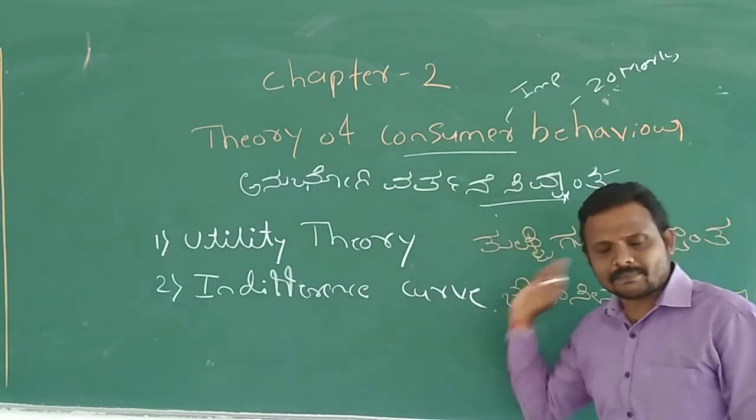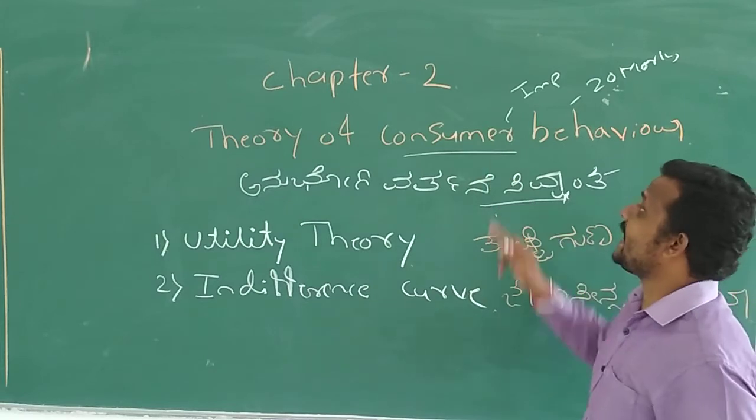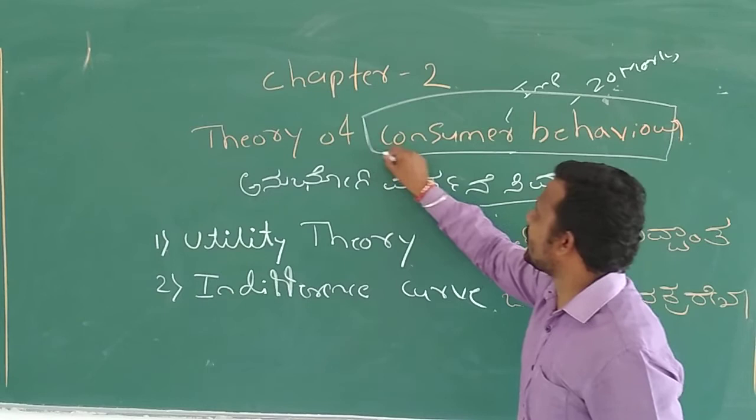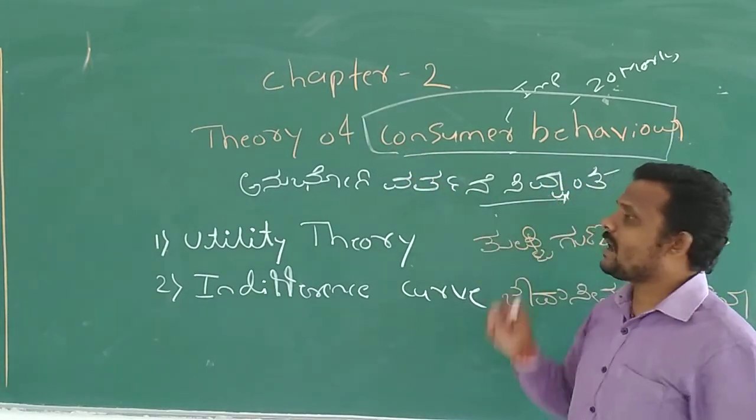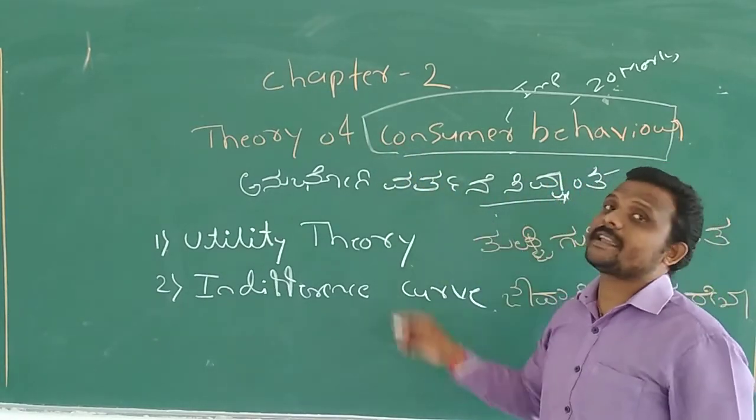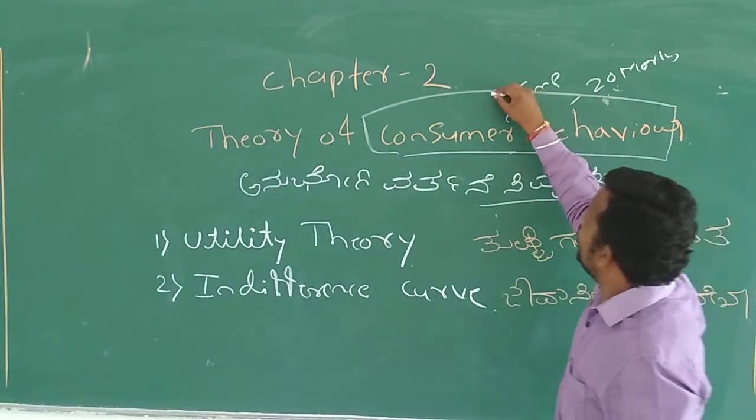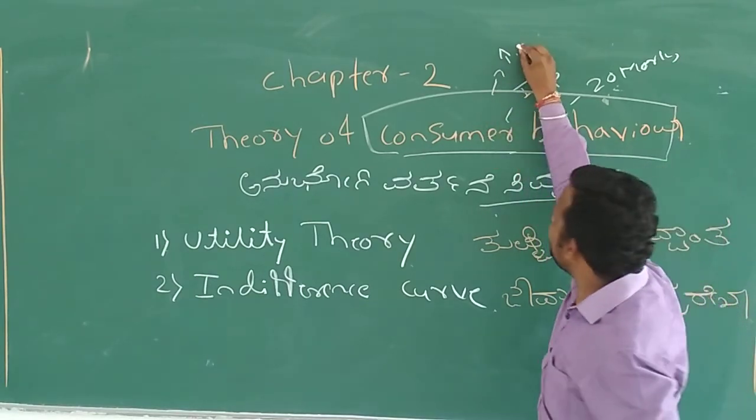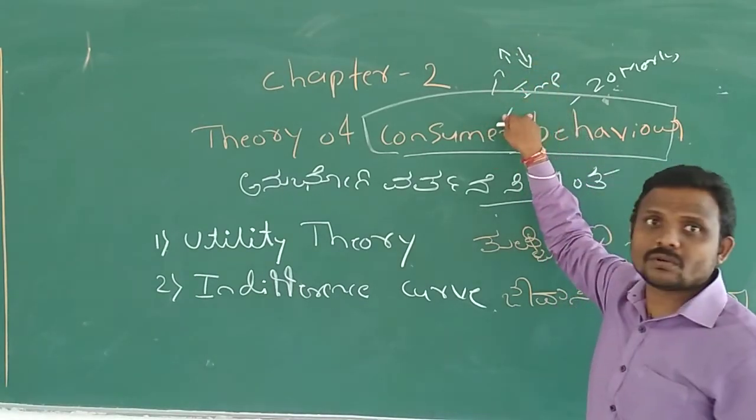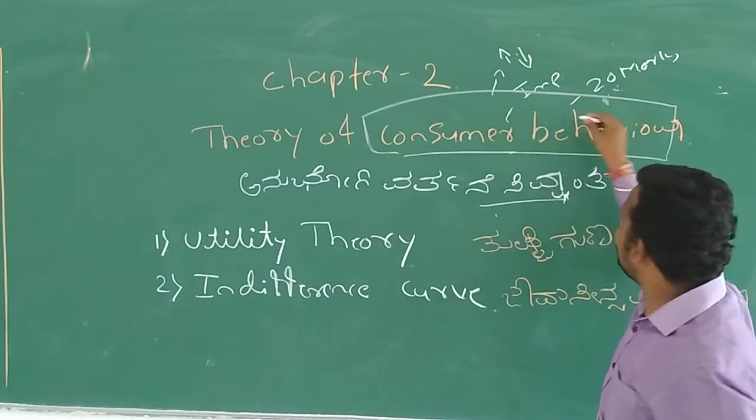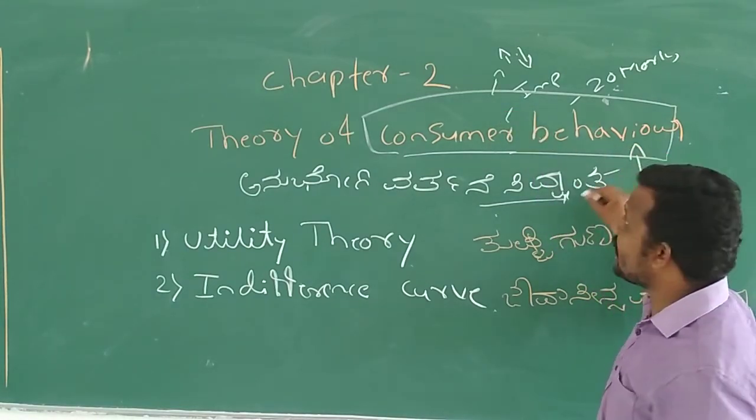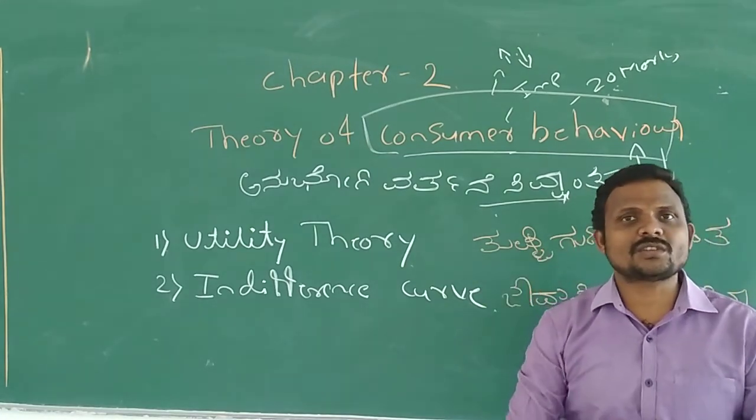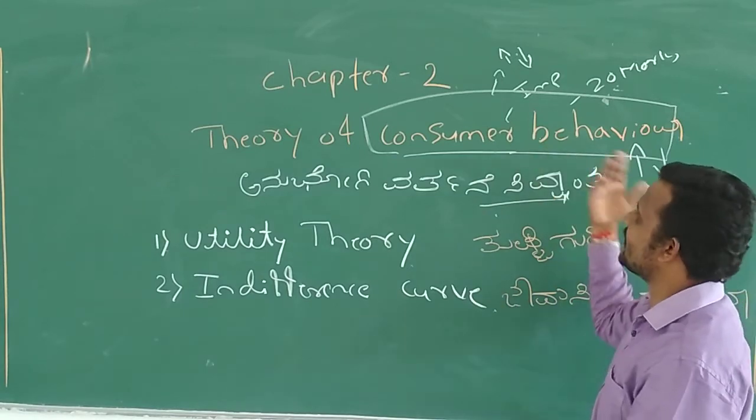In this chapter we have discussed the theory of consumer behavior. Here we have discussed consumer behavior - his behavior. When income is increased, how does the behavior change? When the commodity price increases, how does consumer behavior change? When the substitute goods price decreases, how does consumer behavior change?